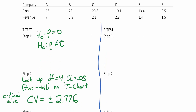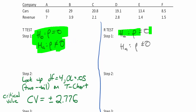Now let's do the R-test. The R-test starts off with the null and alternative hypothesis. As you compare R-test versus T-test, look for similarities. In both, the null hypothesis is rho equals 0 and the alternative is rho is not equal to 0. These two steps are exactly the same — same null and alternative hypothesis.